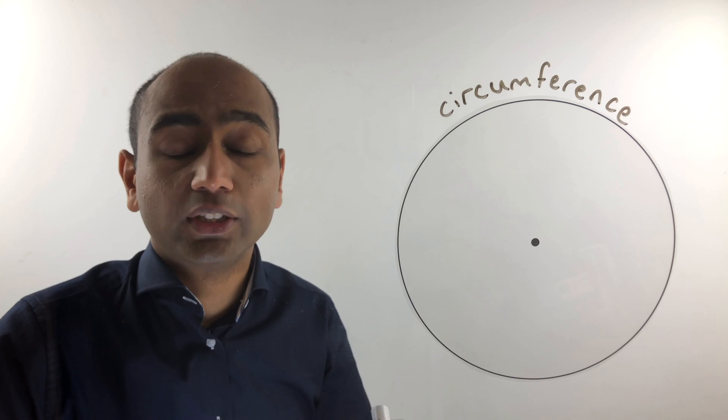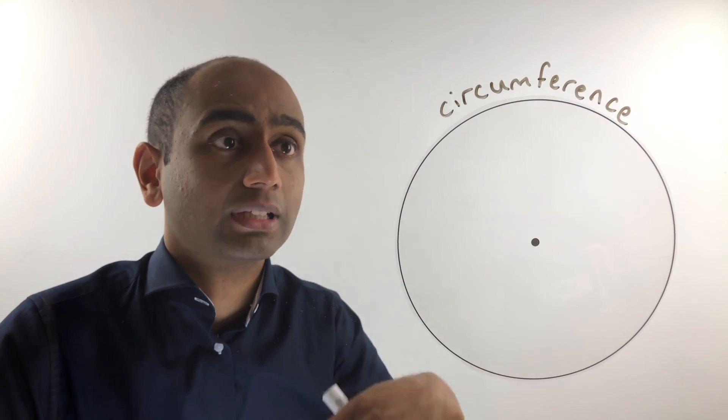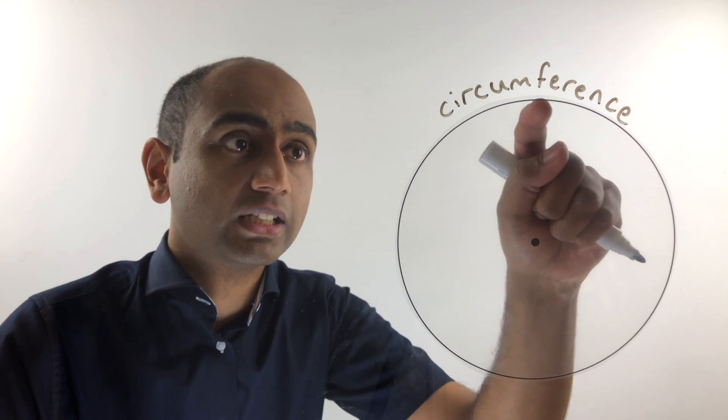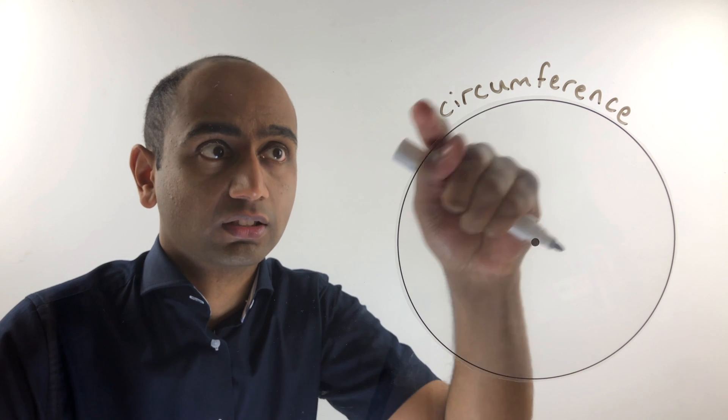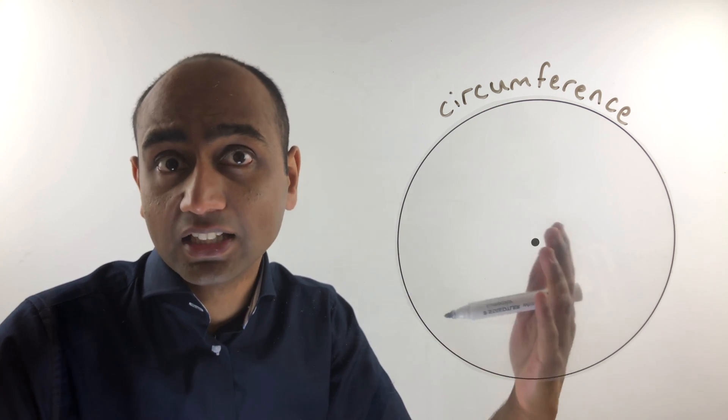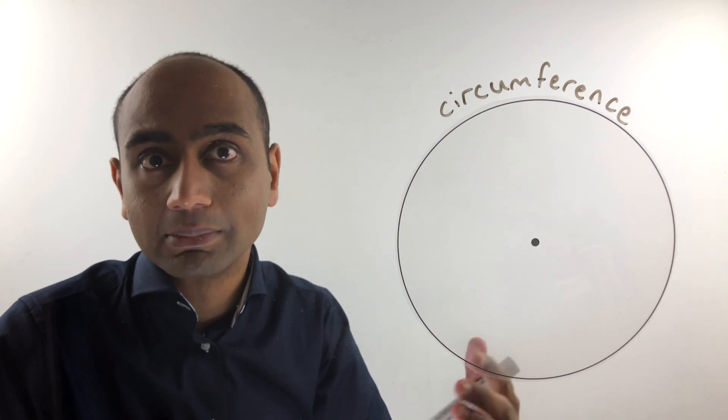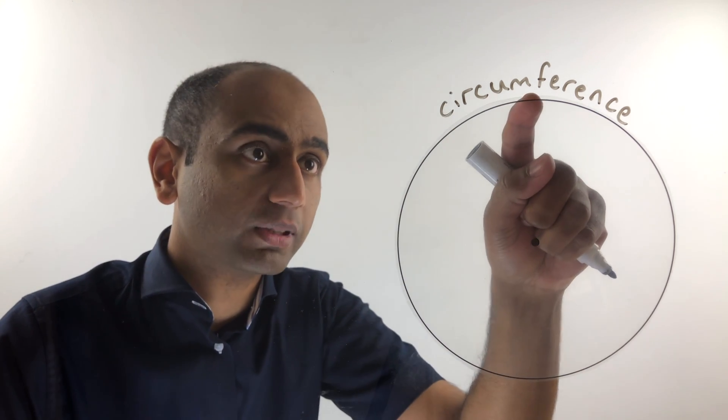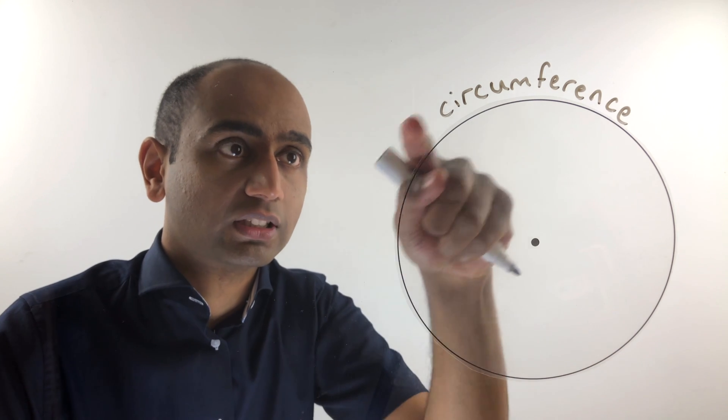The third keyword we're looking at is circumference. Now the circumference of a circle is simply the distance all the way around it. You might already know a word for this—it's basically the perimeter of a circle. It's got a special name in the case of a circle, but it's simply the distance all the way around it.